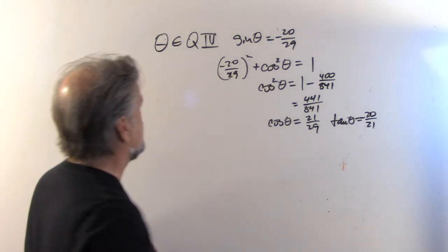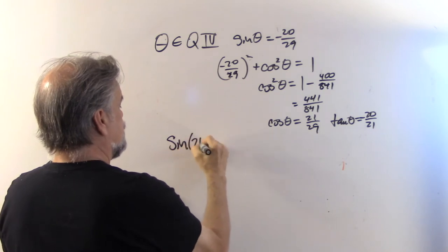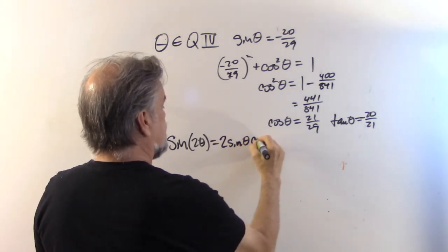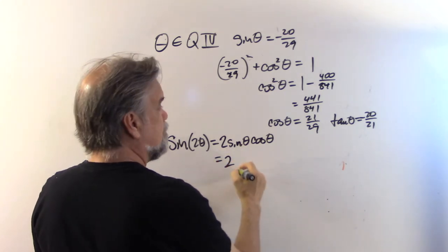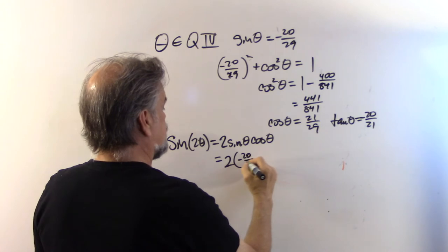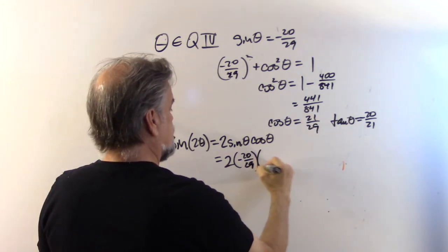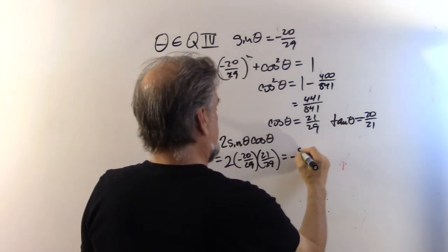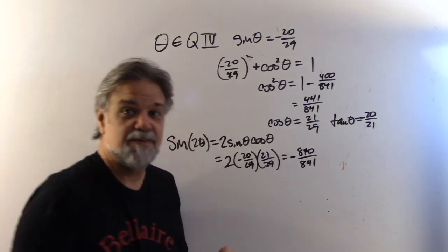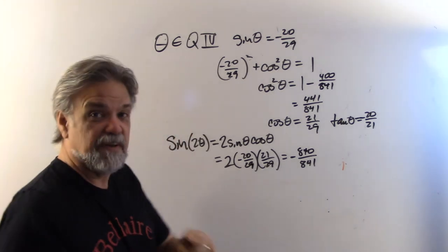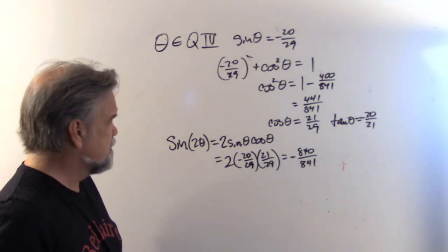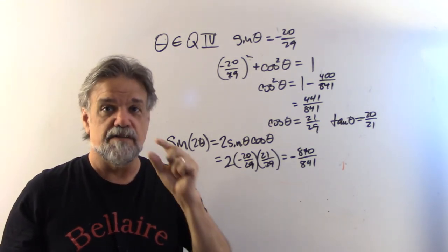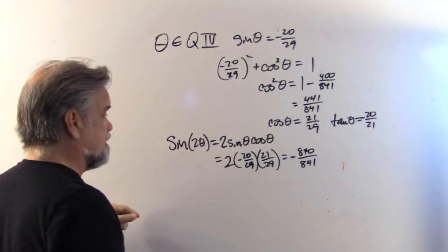Now let's use our new identity. The sine of 2θ equals 2 times sine θ times cosine θ, which is 2 times (negative 20/29) times (21/29). That gives us negative 840/841 — a number really close to negative 1 but not quite. Since the sine is close to negative 1, the cosine should be a small number close to 0.